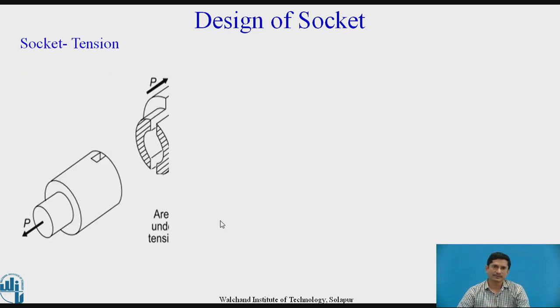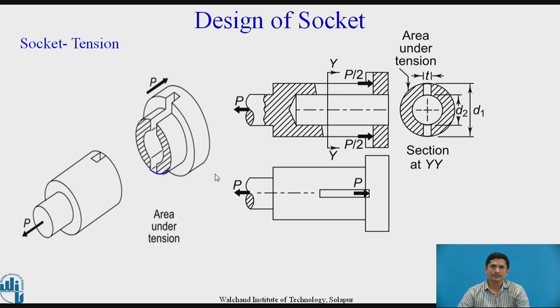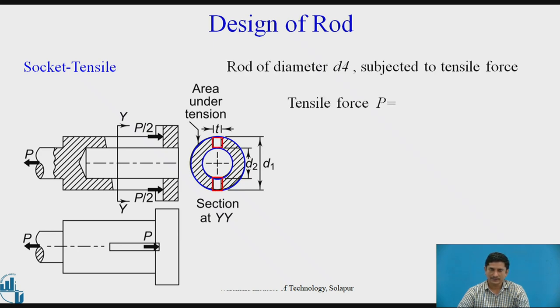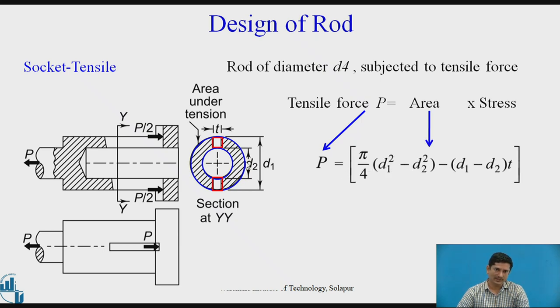Then design of socket. Socket is under tension, this zone. This is section YY. We can see that outer diameter, inner diameter. Outer dia, inner dia. And I need to reduce this from the total ring area. I can write this equation. Outer diameter is D4. This diameter is D2, D1. Force P is given as π/4(D1² - D2²). D1 is outside diameter, D2 is inside diameter minus D1 minus D2. I can get this equation.